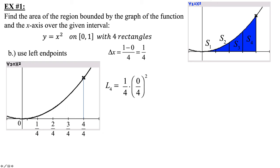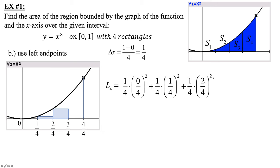When we did right endpoints, we went to the upper right-hand corner; now we go to the upper left-hand corner. The second rectangle: the upper left-hand corner hits the curve, so that's one-fourth times one-fourth squared. Third rectangle: we go up until we hit the curve on the upper left-hand corner, giving one-fourth times two-fourths squared. Last rectangle: the upper left-hand corner hits at three-fourths, so one-fourth times three-fourths squared.